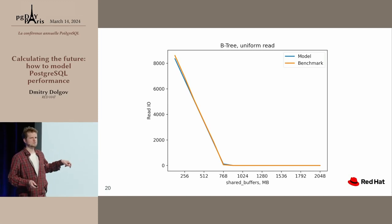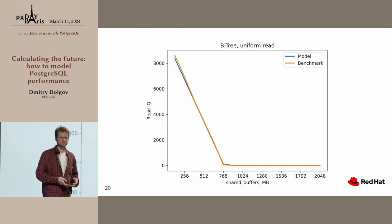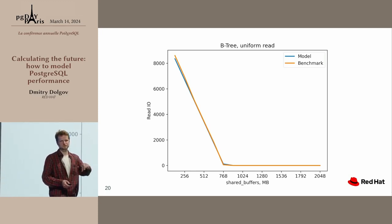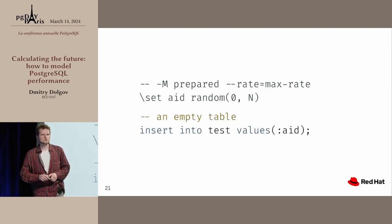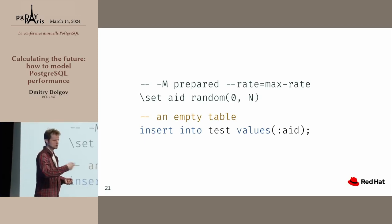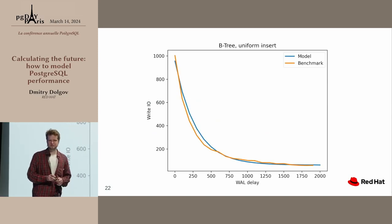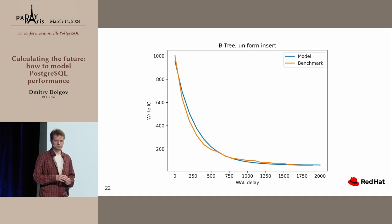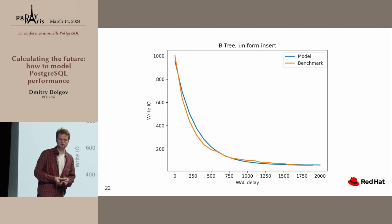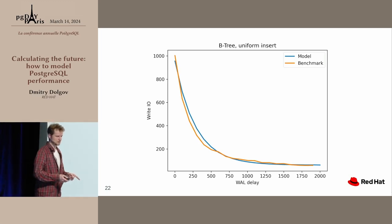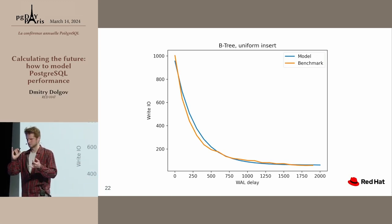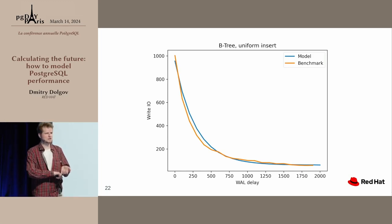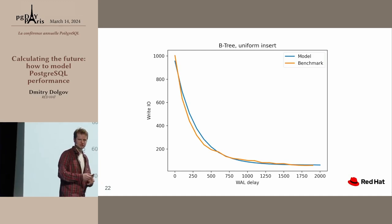On the x-axis we vary the amount of shared buffers — the memory Postgres can use — and on the y-axis we have read I/O operations produced. The difference between model and benchmark is quite small. A similar thing happens with insert workloads: we're inserting into an empty table. The model in blue and the real benchmark in orange are again quite close. Here we're modifying the WAL writer delay on the x-axis, because even without using WAL for the table, committing transactions still has to land in the write-ahead log — there is no way around this.